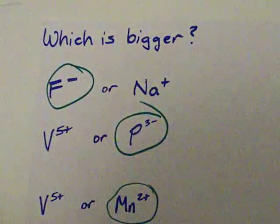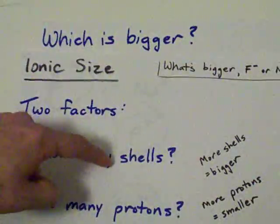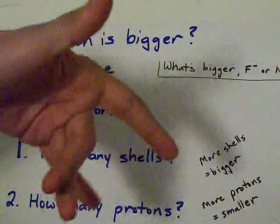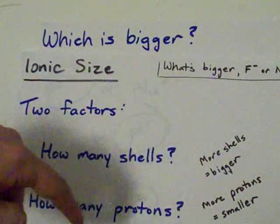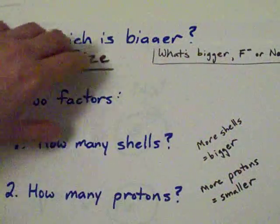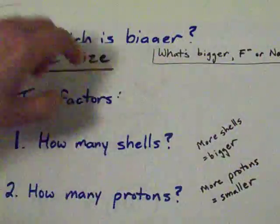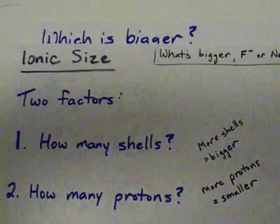Anyways, play the game, which ion is bigger? Count the number of electrons. That straight up controls the size, but if they have the same number of electrons, it comes down to protons. And whichever one has more protons holds the atoms tighter and is smaller. All right, best of luck, guys.